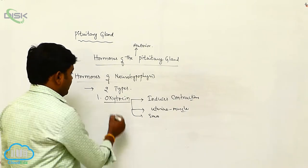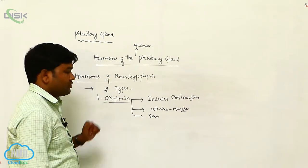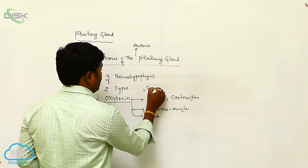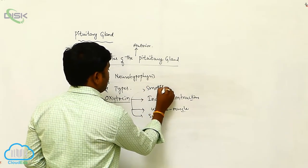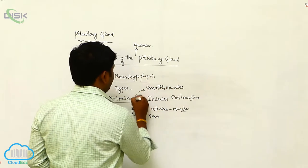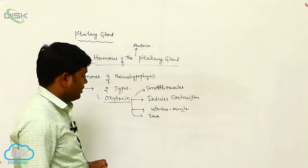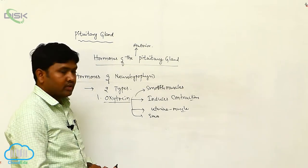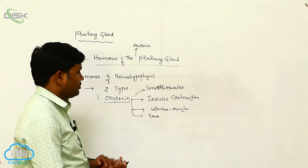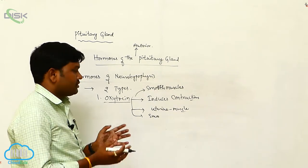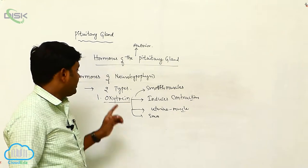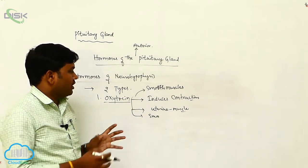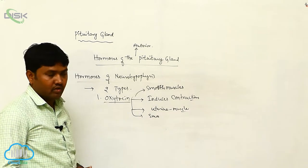Oxytocin generally works on the smooth muscles. It induces contractions, so during the delivery time, during childbirth, the uterine muscles will be enlarged, so the child will come out. The oxytocin helps with contractions of the smooth muscles.